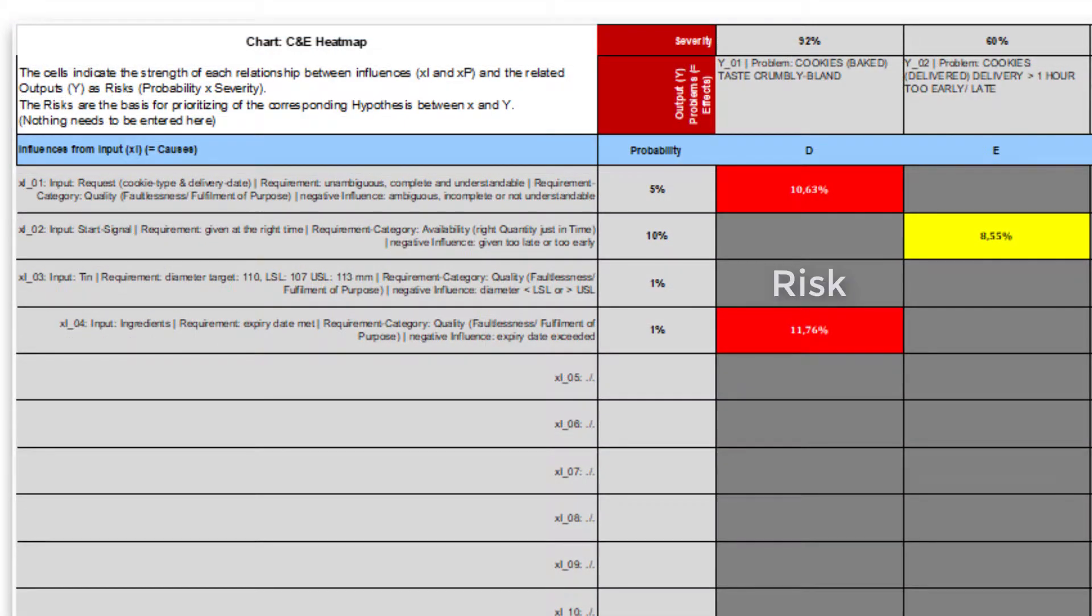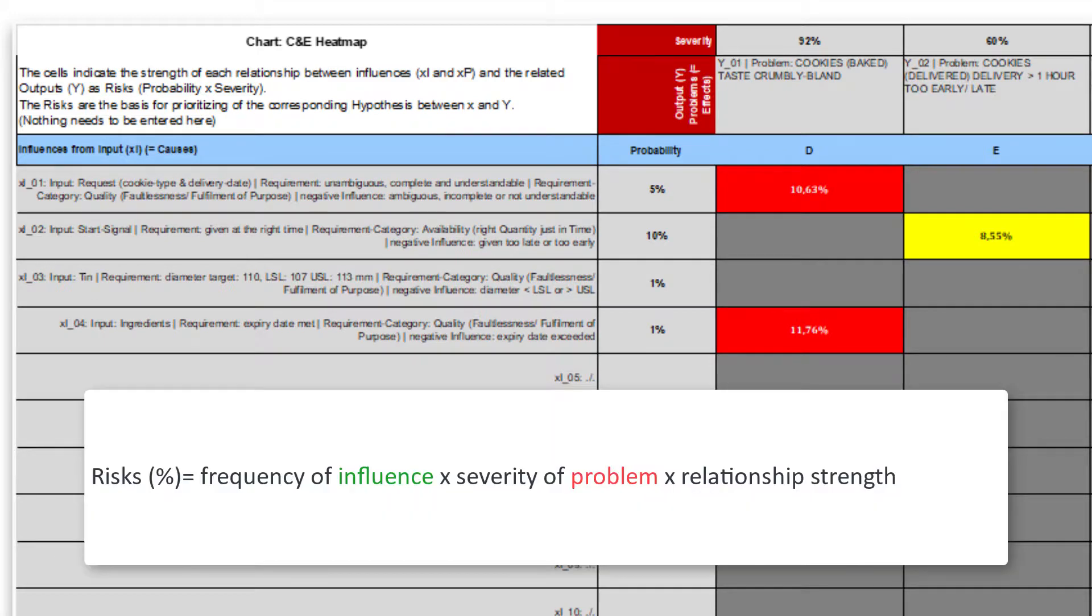The risk of each influence-problem pair is the most important result. It is calculated from the available information and displayed in the chart cause and effect heatmap. These risks express the basic function of six sigma, Y is a function of X, and represent the relevance for the resulting hypothesis. Each risk in each cell results from the multiplication of the frequency of an influence, the severity of its caused or increased problem, and the strength of the relationship between influence and problem. And these risks can vary between 0 and 100 percent.